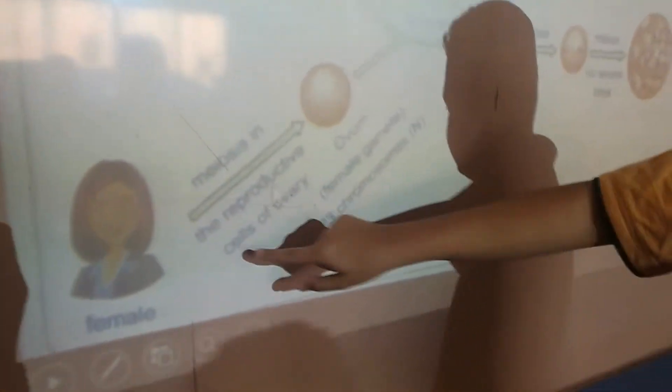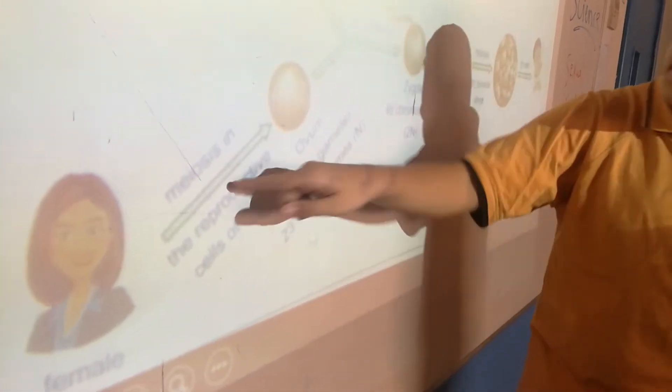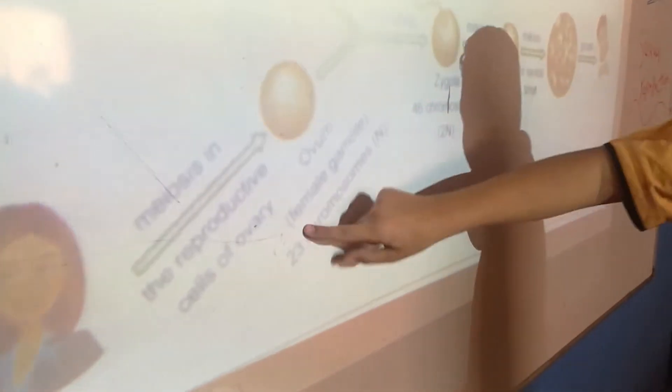And we have also here the female. The female meiosis in the reproduction cells of the ovary. The female has an organ called the ovary, it produces ovum. Here's the ovum, we have the ovum female gametes.